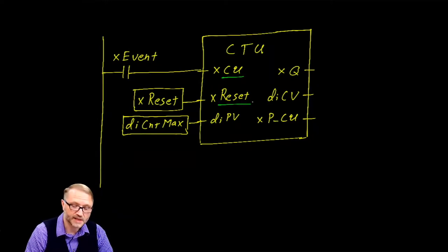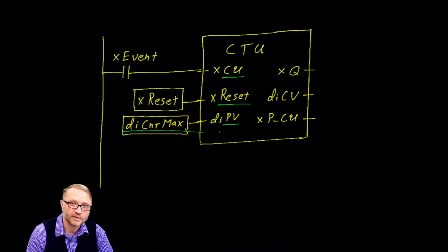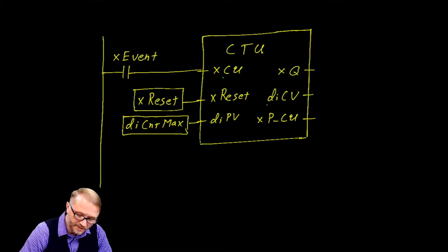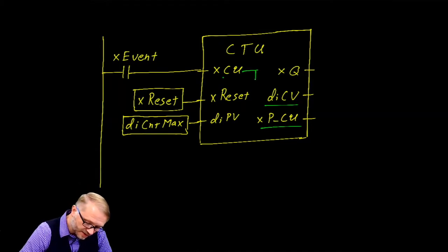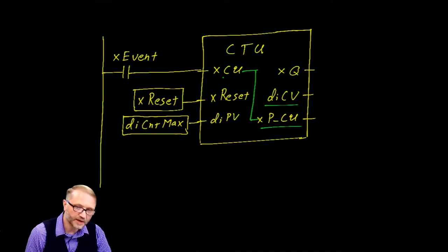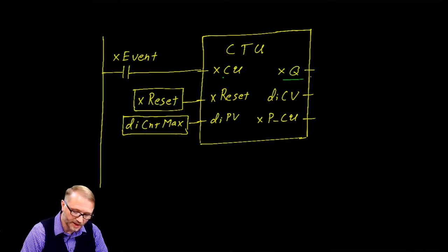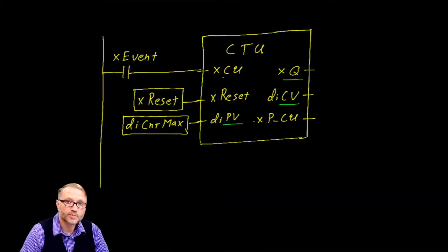Reset resets our count back to zero. This is the program value — I like to think of that as the maximum count that this timer will achieve. We have the current value of the count. And this one's rather interesting: this is the previous value of count up. So internally, you could think of these two as simply being wired together — whatever count up does, the previous value of count up will do the same. And finally, we have a Q output, and the Q output will be high when the current value has achieved the program value.